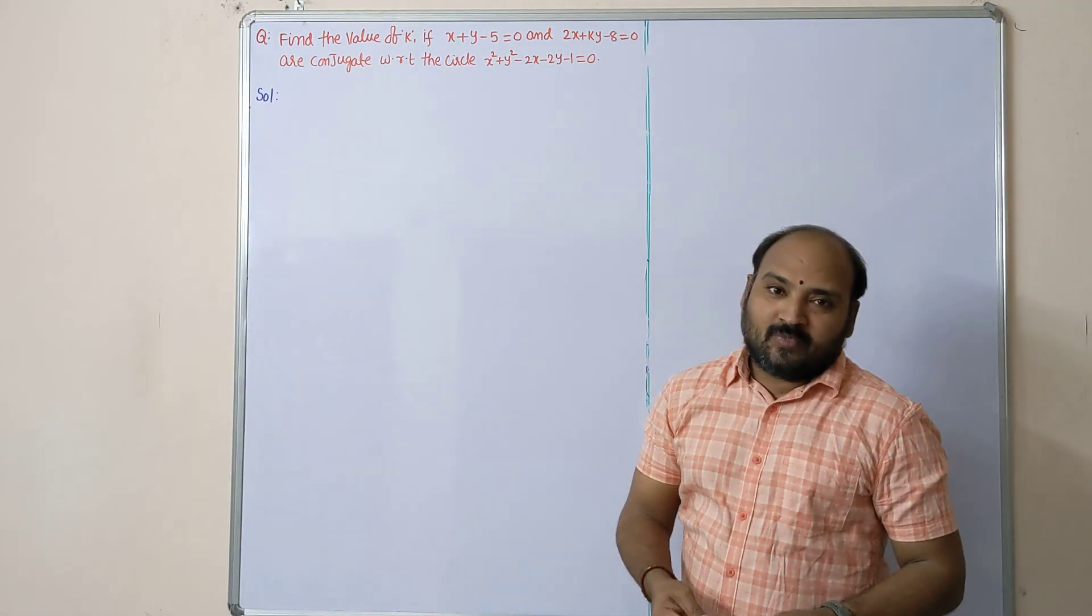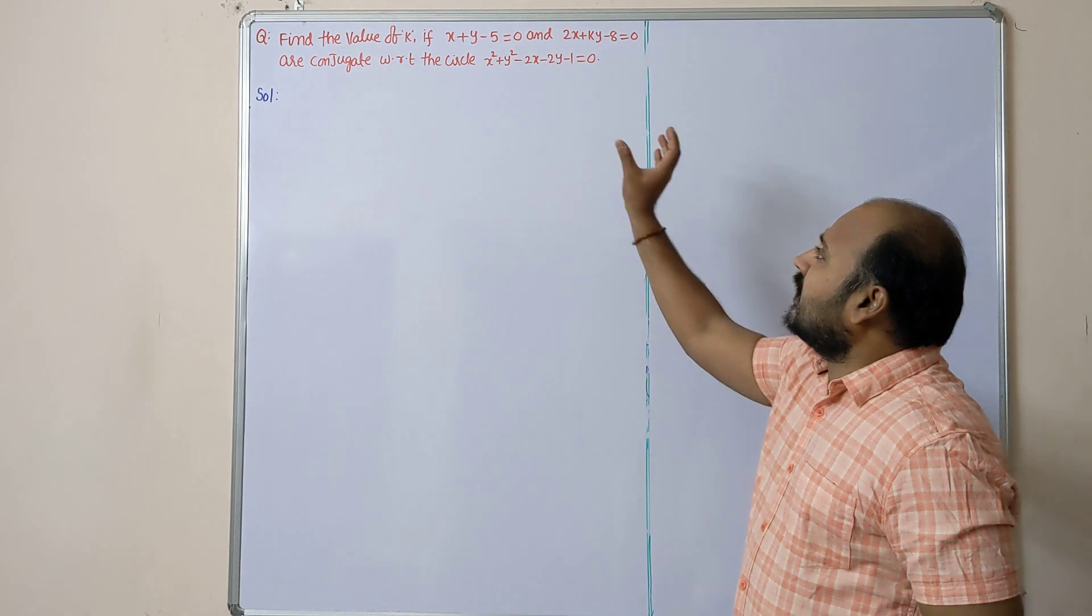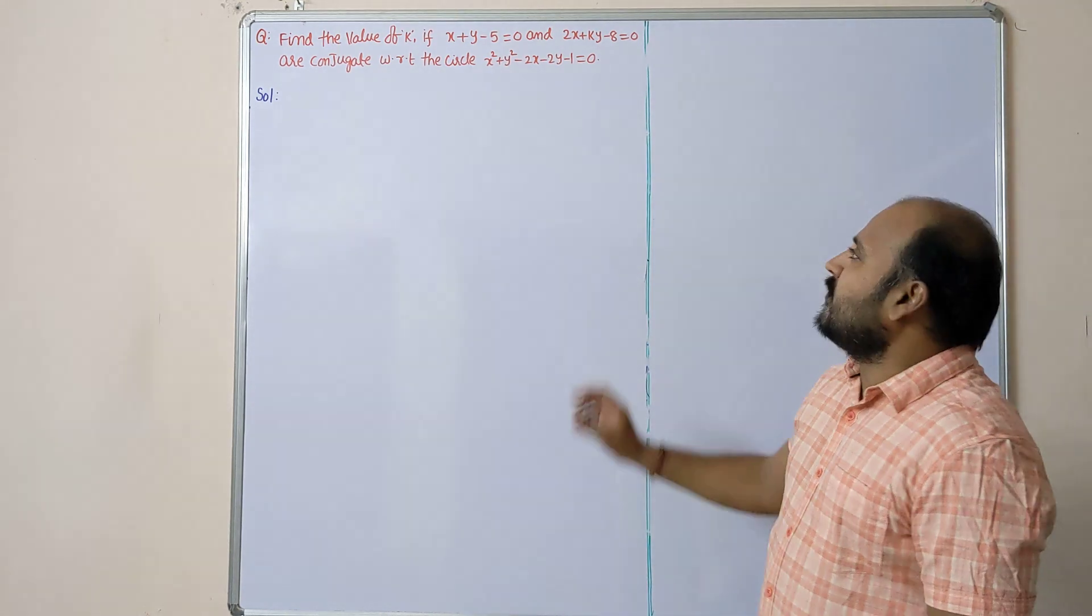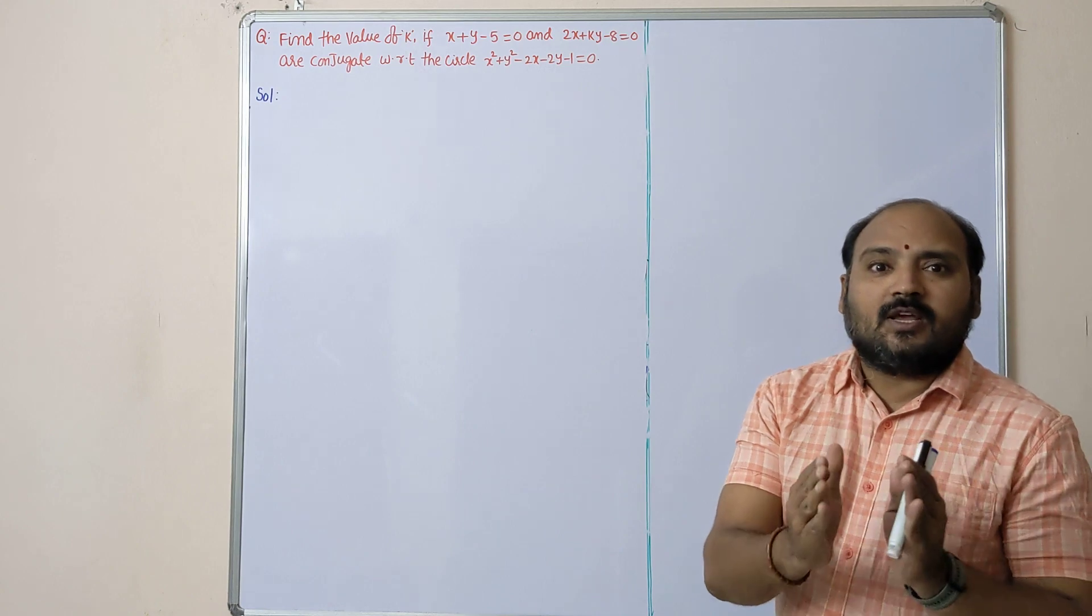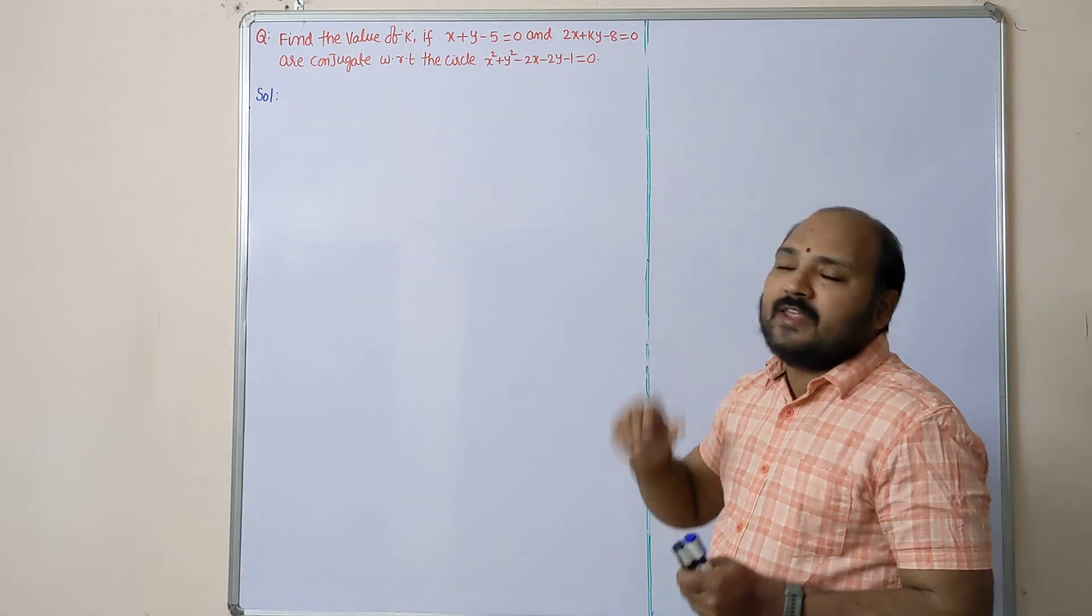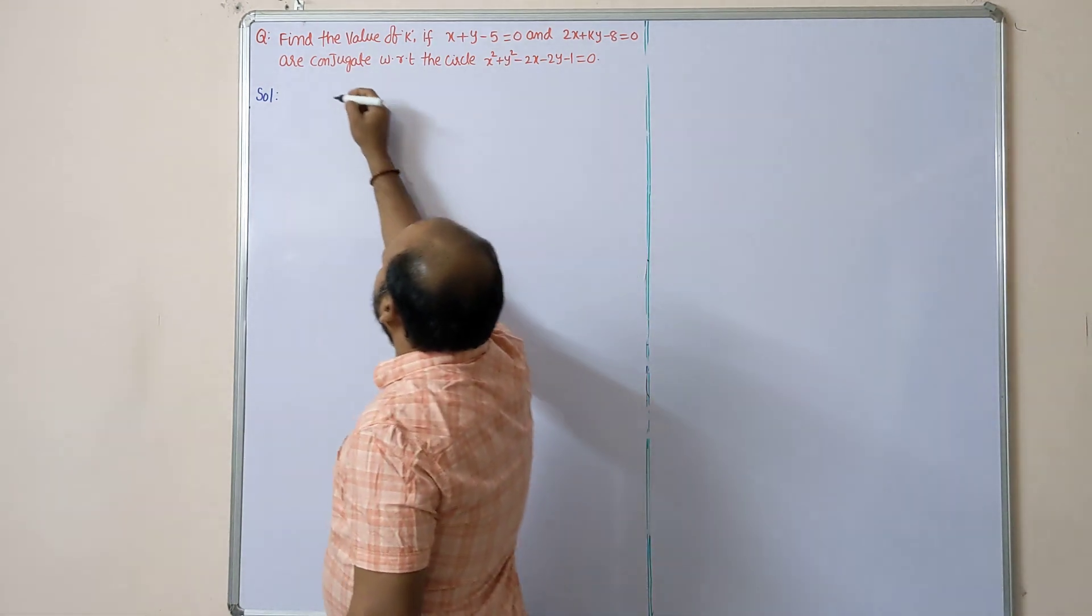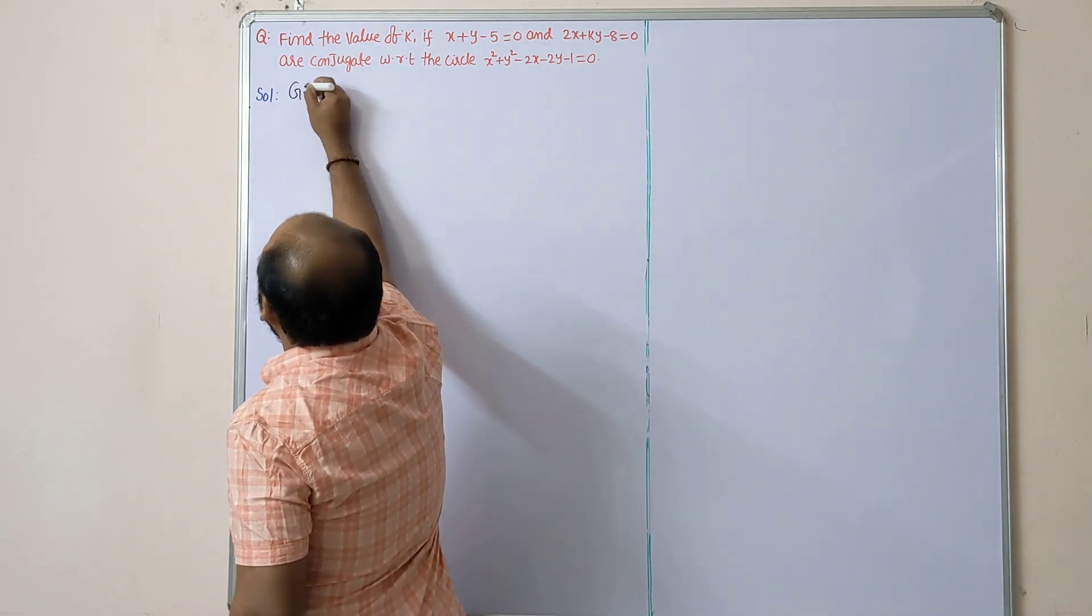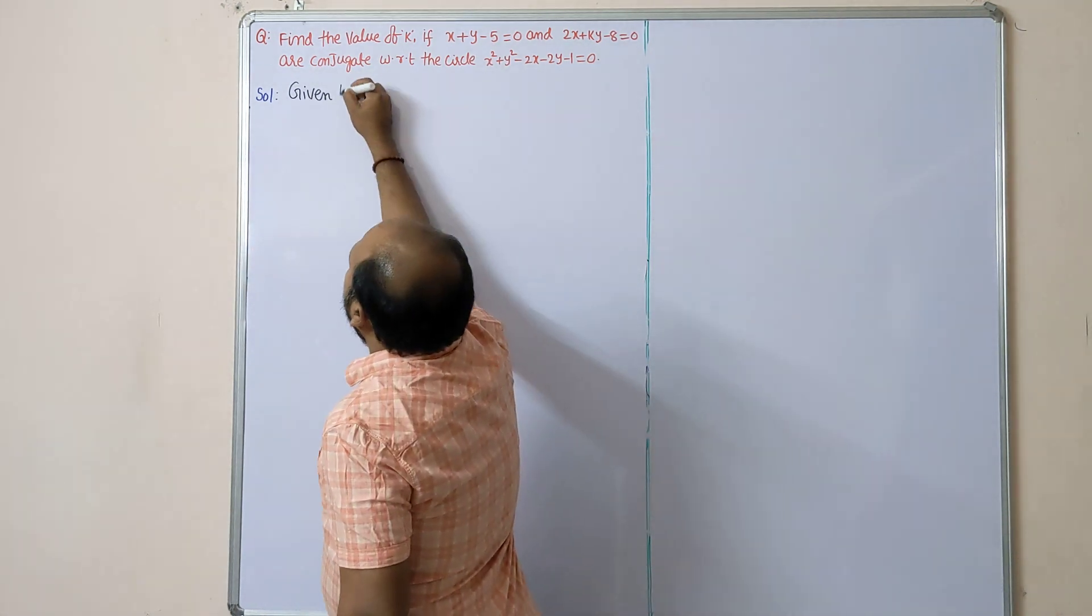First, the given lines you have to write, and the given circle, then find out g, f, c and radius of the circle. See, first step: given lines. Proper steps are very important dear students in the board of intermediate education.